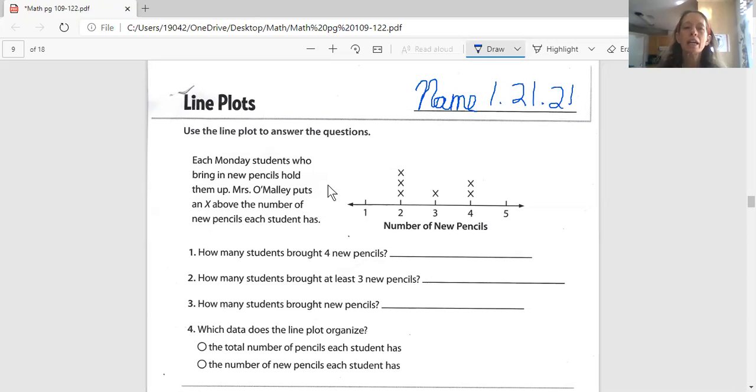Line plots. The directions say, use the line plot to answer the questions. Each Monday, students who bring in new pencils hold them up. Mrs. O'Malley puts an X above the number of new pencils that each student has. So you can see here, here's my label. My label, it's also my title for this graph. It says the number of new pencils. So if someone brought in two new pencils, the X's would go here. If someone brought in one new pencil, an X would go here. If someone brought in five, an X would go here. So you can use the information right here to find out how many pencils were brought in.